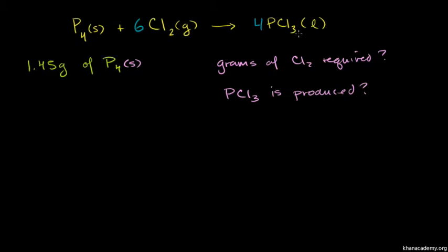Now the next thing we have to do, now that we know we have a balanced equation, is figure out how many moles of phosphorus we're dealing with. Because once we know the moles, we can use the stoichiometric ratios — which essentially says, for every mole of that, I need six moles of that, and for every mole of that, I'm going to produce four moles of that. So you want to get it all in terms of moles.